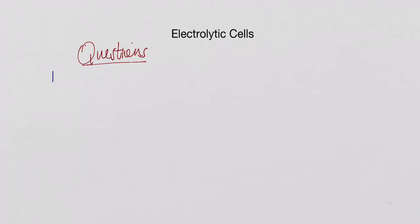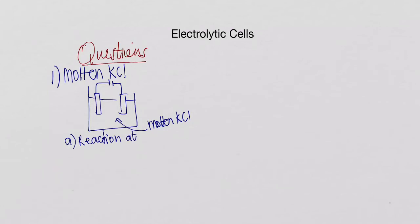The first question is, if we have a case where we have molten KCl in a beaker with our two electrodes, I would like you to tell me: A. Give me the reaction that will occur at the anode. B. Give me the reaction that will occur at the cathode. And C. Give me the net ionic equation, the overall equation in this entire molten KCl electrolytic cell.